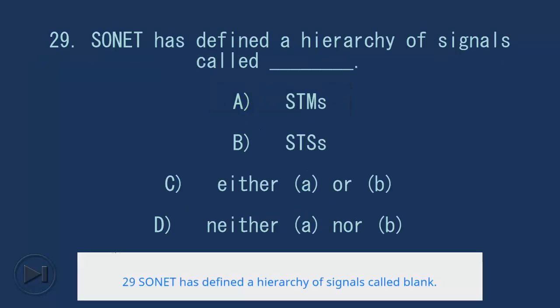29. SONET has defined a hierarchy of signals called blank. A. STM, B. STS, C. Either A or B, D. Neither A nor B. Answer: B. STS.